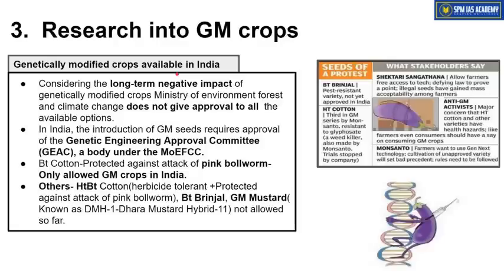Considering the negative impact of GM crops, permission to grow them in India is not easily granted. The Government of India has set up an agency called the Genetic Engineering Approval Committee (GEAC), under the Ministry of Environment, Forest and Climate Change. GEAC approves which genetically modified crops can be grown in our country. Only GEAC-permitted crops can be grown; no other GM crop can be grown in India. As per GEAC permission, only BT cotton has been officially permitted in India for commercial-scale cultivation.